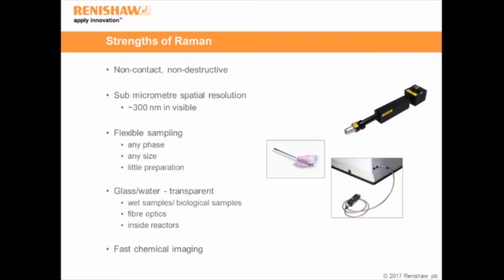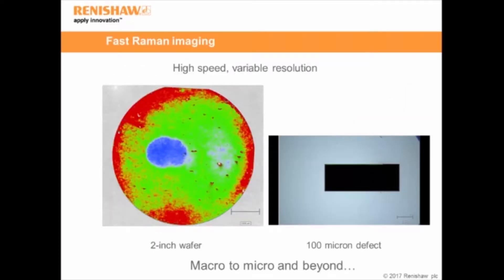The last thing I want to mention is fast chemical imaging. Fast Raman imaging involves shining the laser on different points of the sample and collecting a spectrum.